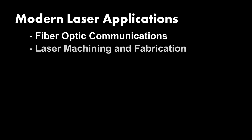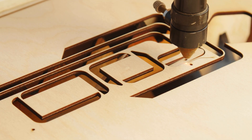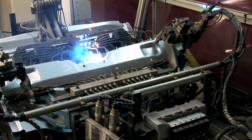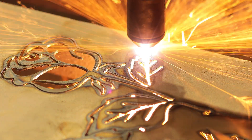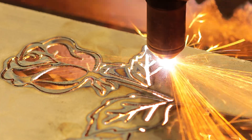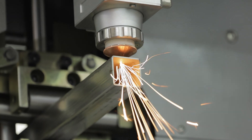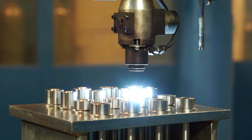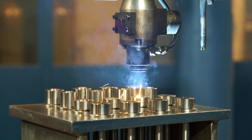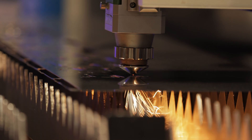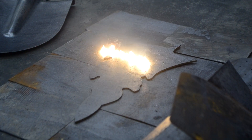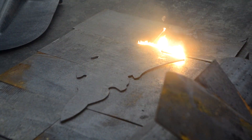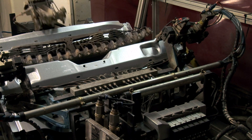Laser Machining and Fabrication. This is the use of lasers to cut, weld, drill, mark, or engrave materials such as metal, wood, plastic, or glass. The lasers can produce very high temperatures and pressures which can melt or vaporize the material. The lasers can also create very precise and complex shapes and patterns which are difficult or impossible to achieve with other tools. Laser machining and fabrication is widely used for industrial, manufacturing, and artistic applications.